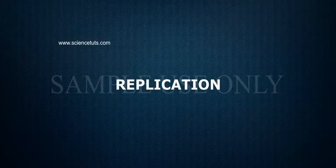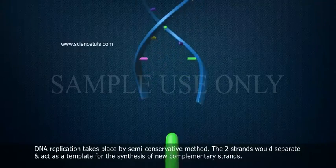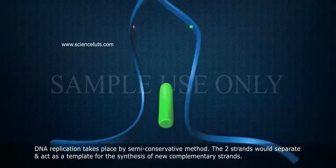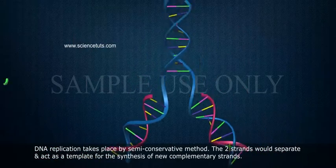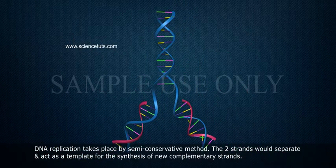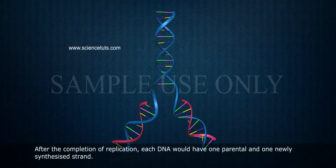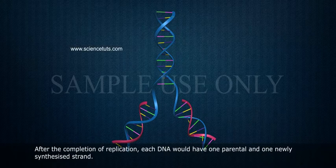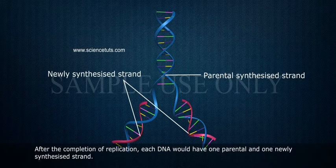DNA replication takes place by a semi-conservative method. The two strands would separate and act as a template for the synthesis of new complementary strands. After the completion of replication, each DNA would have one parental and one newly synthesized strand.